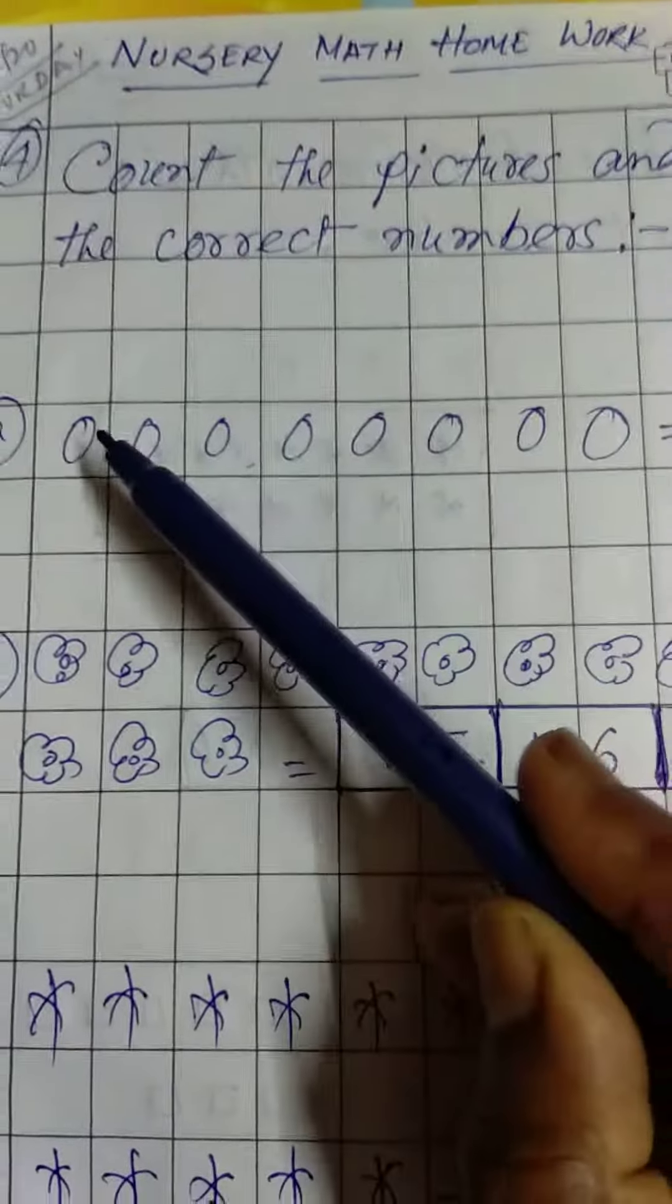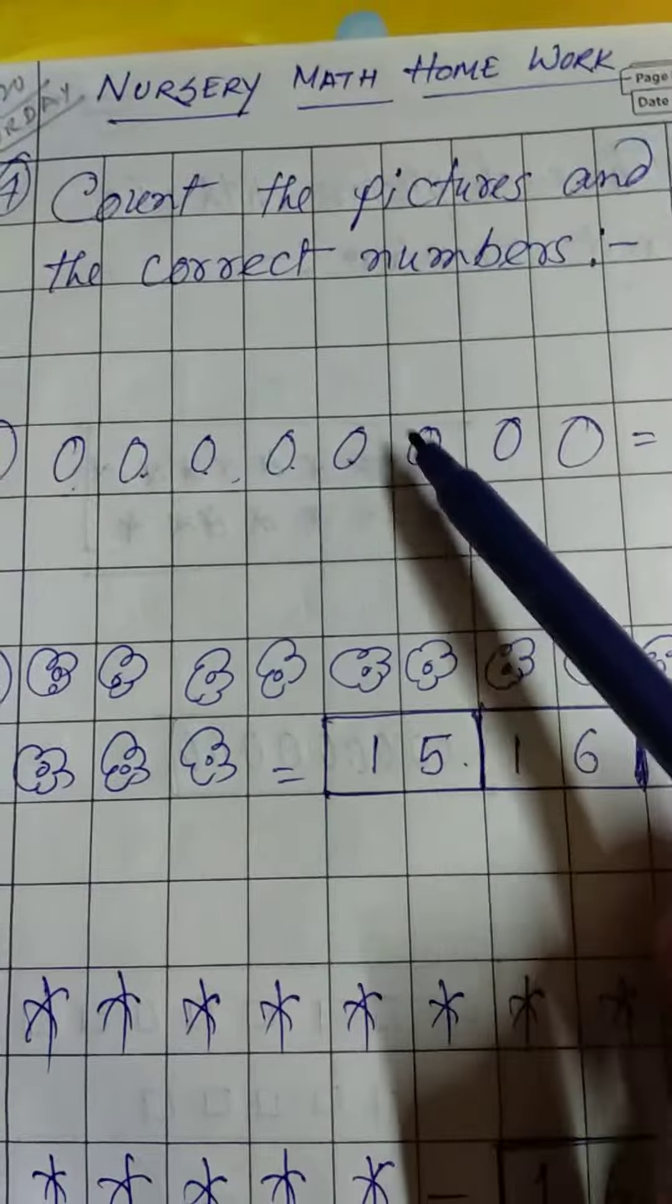Let us start. 1, 2, 3, 4, 5, 6, 7, 8. So this is 7, this is 9, and this is 8. You have to circle 8. Okay, now next one. Count 1, 2, 3, 4, 5, 6, 7, 8, 9, 10, 11, 12, 13, 14, 15.